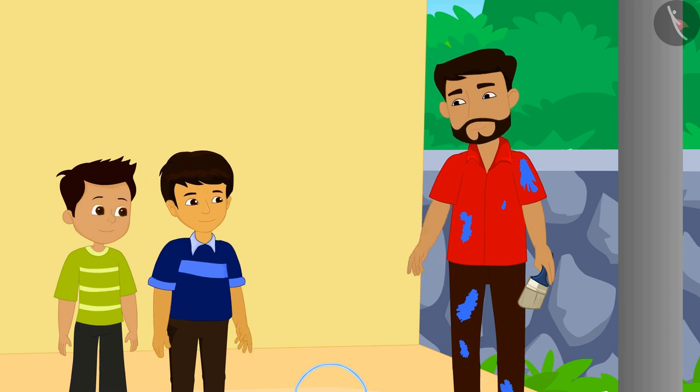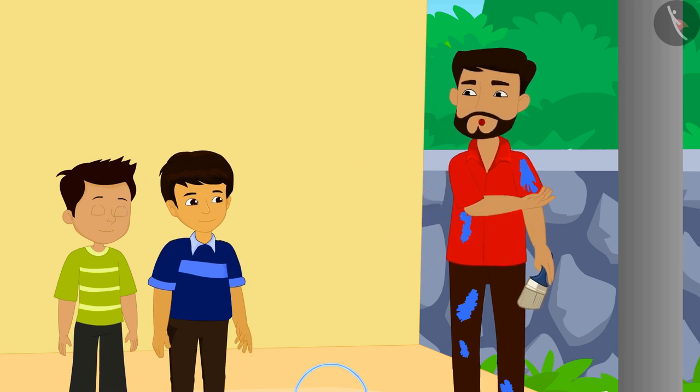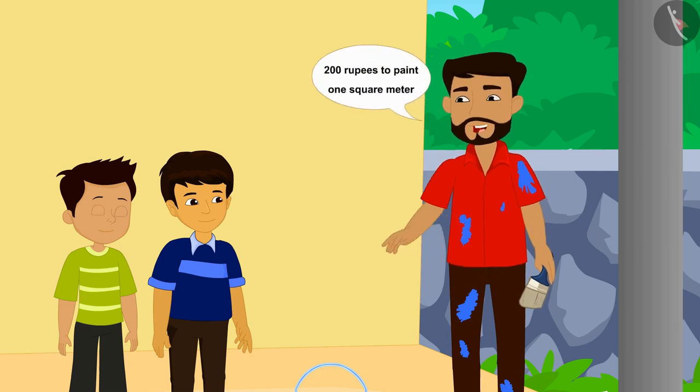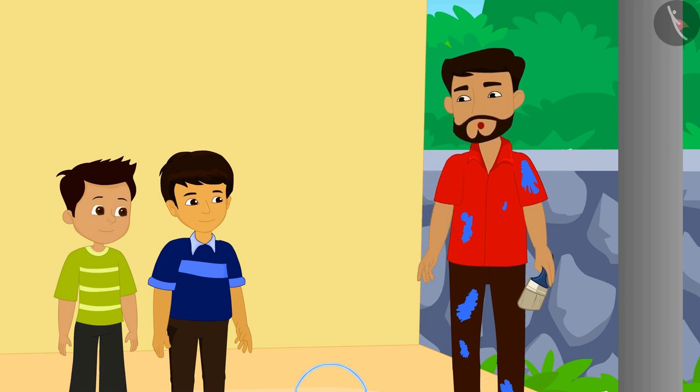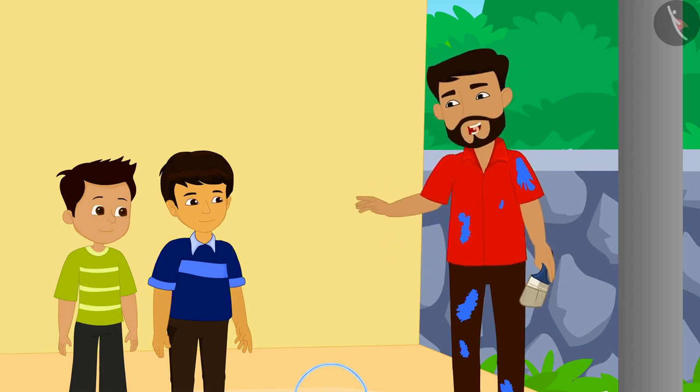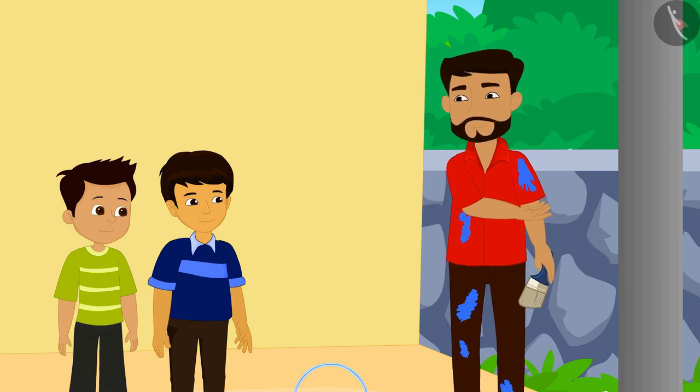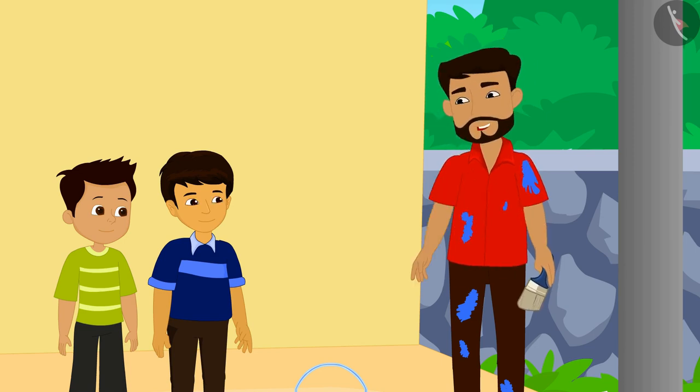Children, I got the job of coloring this pillar. I take 200 rupees to paint one square meter. But this pillar is cylindrical. Hence, I cannot figure out how much money I should take for coloring this column.